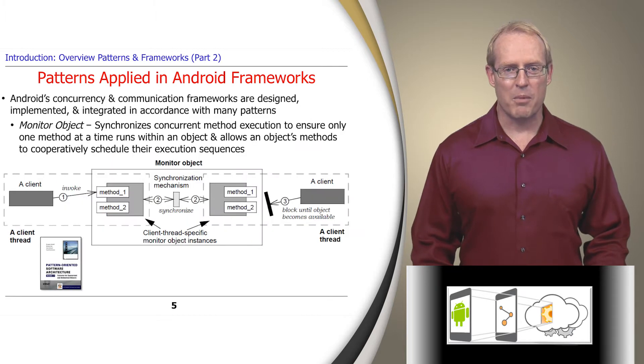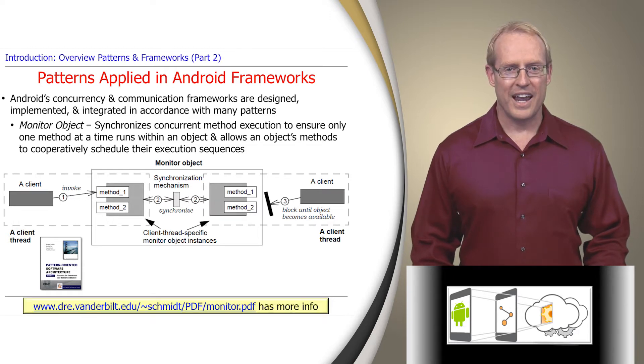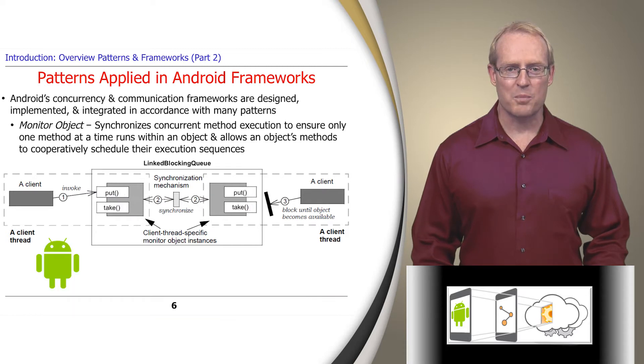For example, the monitor object pattern synchronizes concurrent method execution to ensure that only one method at a time runs within an object. It also allows an object's methods to cooperatively schedule their execution sequences. Android applies this pattern to implement the LinkedBlockingQueue class in the java.util.concurrent package, which provides a synchronized list of linked nodes that enqueues and dequeues elements in first-in, first-out, or FIFO order.